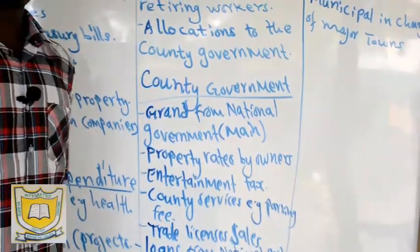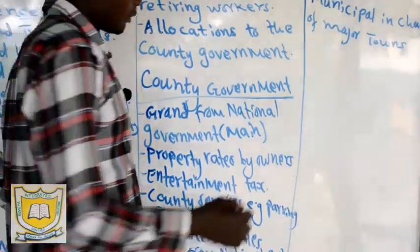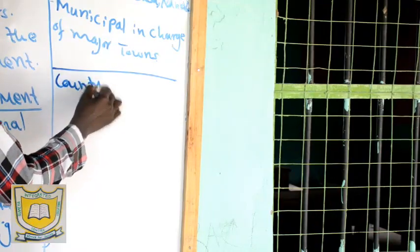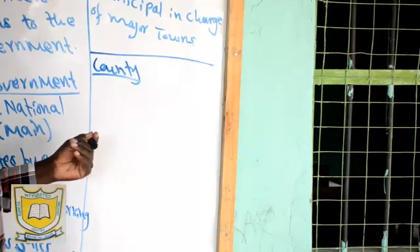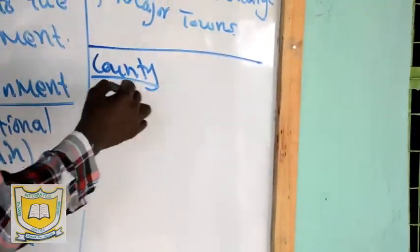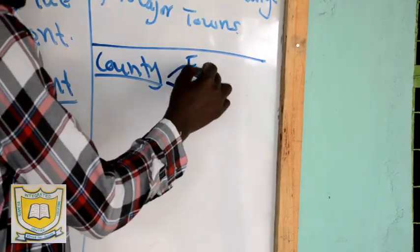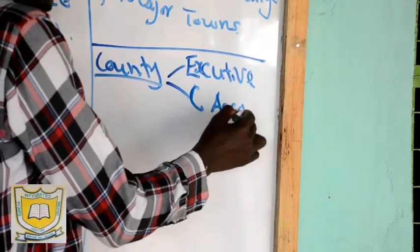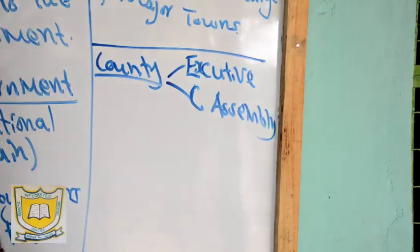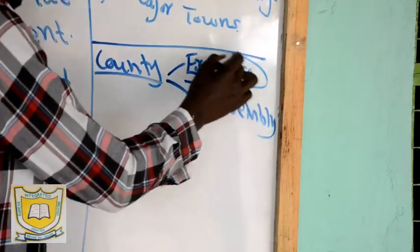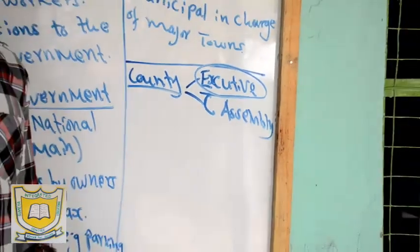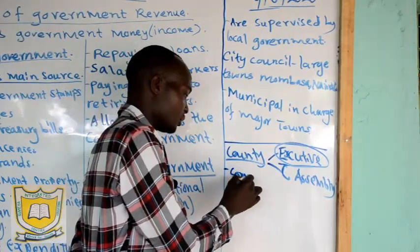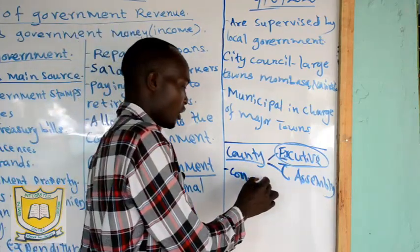Now we want to look at the county government. The county government has two arms: the county executive and the county assembly. The most powerful organ is the county executive, because the governor is there. The governor is the president of the county, elected by registered voters. The governor also appoints members of the executive committee — the Cabinet Secretaries of the county.